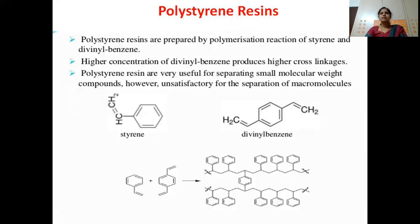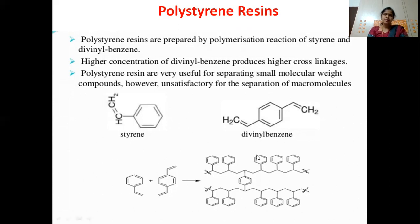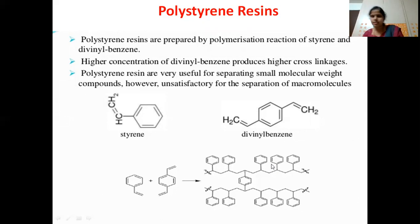An example of a resin is polystyrene resin. Styrene is a benzene ring attached to a vinyl group (CH=CH₂). Divinylbenzene has two vinyl groups at the 1 and 4 positions of benzene. By polymerization of styrene and divinylbenzene, a cross-linked polymer is formed. The para positions of the benzene rings are free, so we can incorporate functional groups there — sulfonic groups for cationic exchange, or quaternary amino groups for anionic exchange.